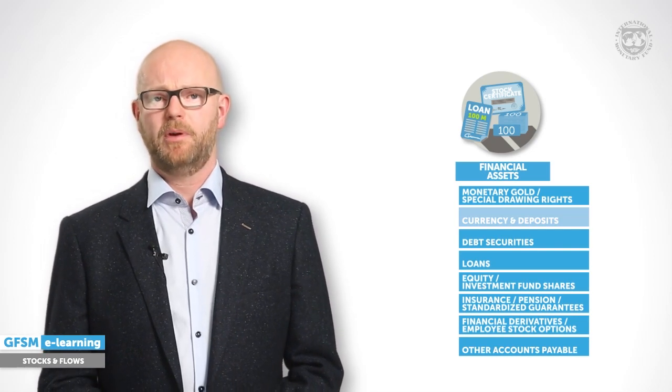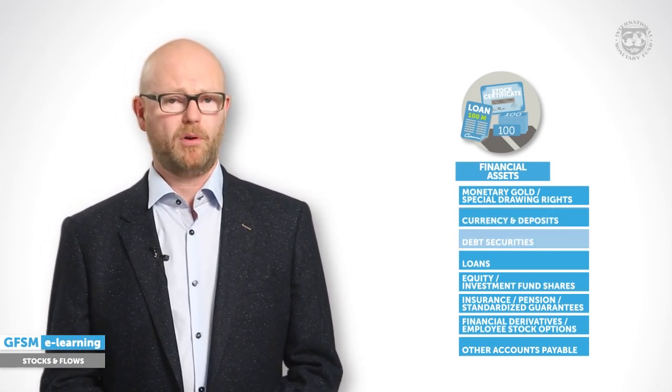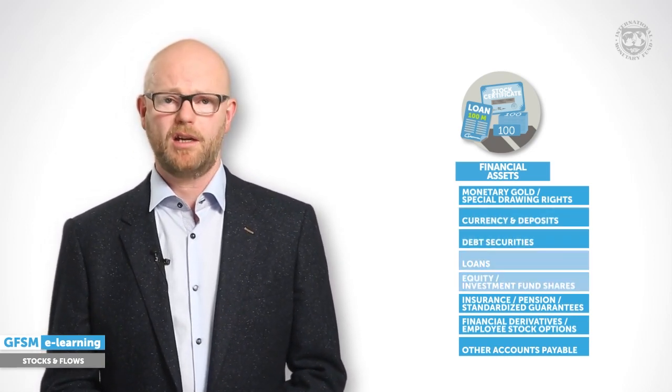Apart from currency and deposits, the government may also possess other types of financial assets. GFSM provides eight main categories for financial assets. Cash is the most liquid category, but there are others like debt securities — bonds for example — loans, and shares and equity. Below the main level, you will also find more detailed subcategories that allow for more specific analysis. Assets are objects a government owns or financial instruments it holds.